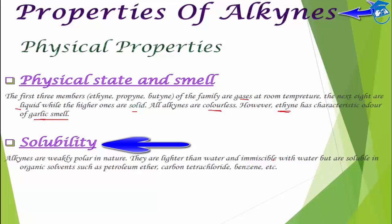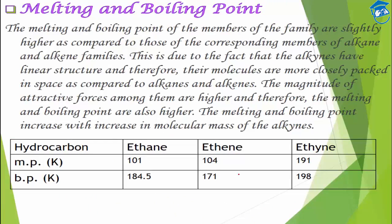Regarding solubility: alkynes are weakly polar, so they are not soluble in water. They are lighter than water and can float on it. However, they are soluble in organic solvents such as petroleum ether, carbon tetrachloride, and benzene. Regarding melting point and boiling point: they are slightly higher compared to alkanes and alkenes because alkynes have a linear structure, so molecules are more closely packed.